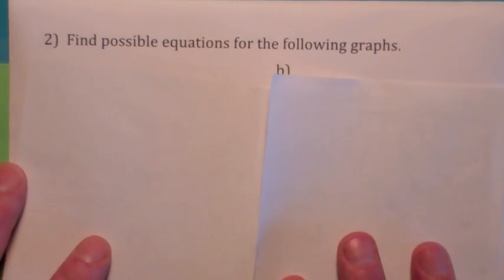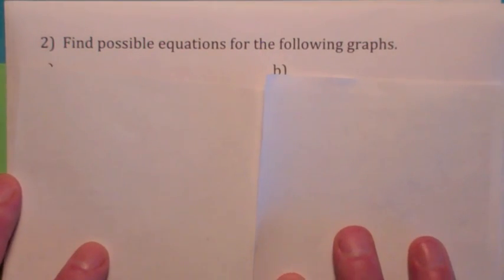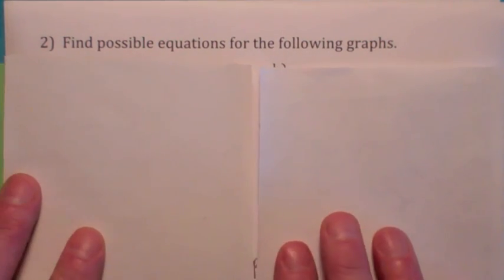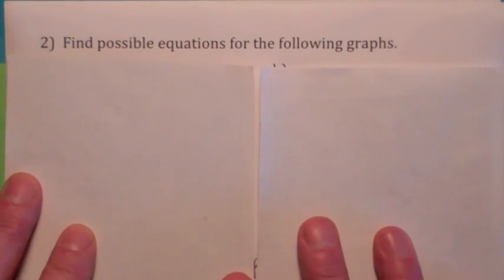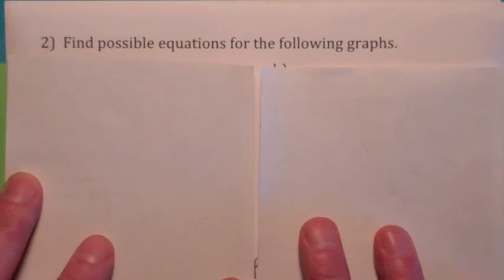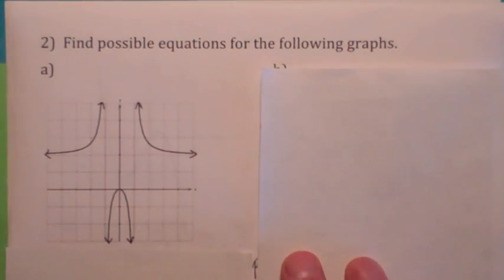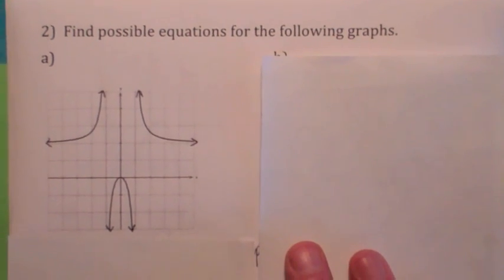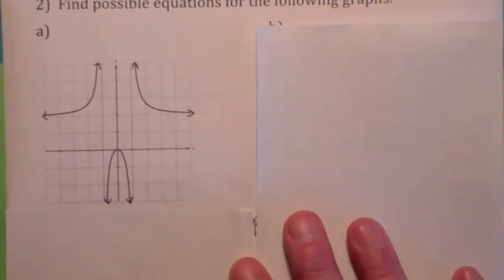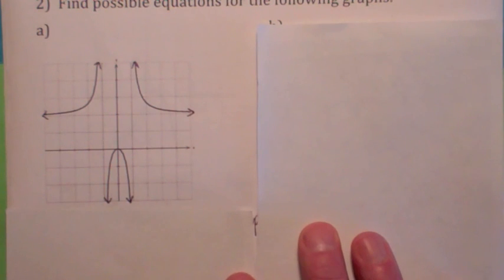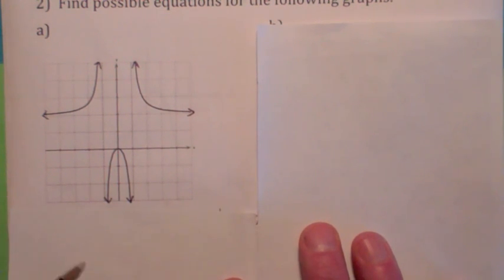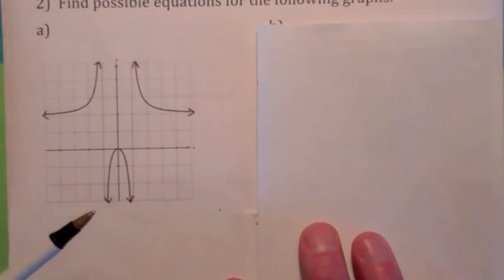For the rest of this video, we're going to go backwards, which means I'm going to give you the graph and some information, and we're going to try to come up with the formula. Is that easier or is that harder? I think some people might think it's harder. But if you know what to look for, it's not that bad.